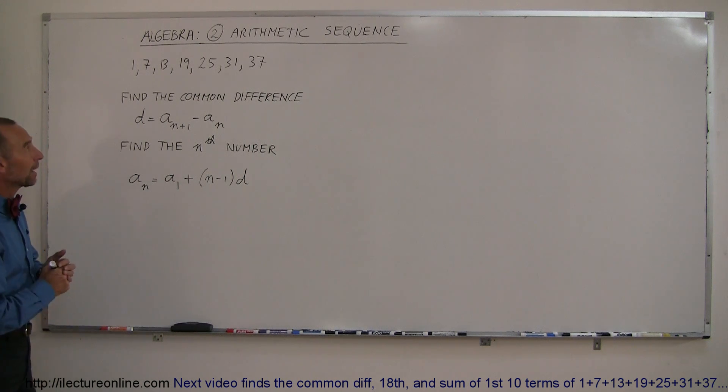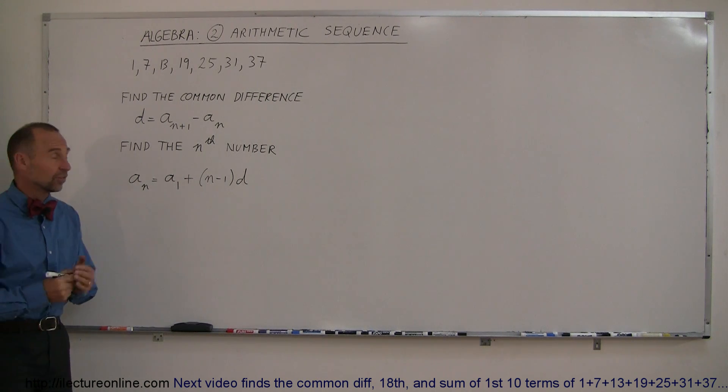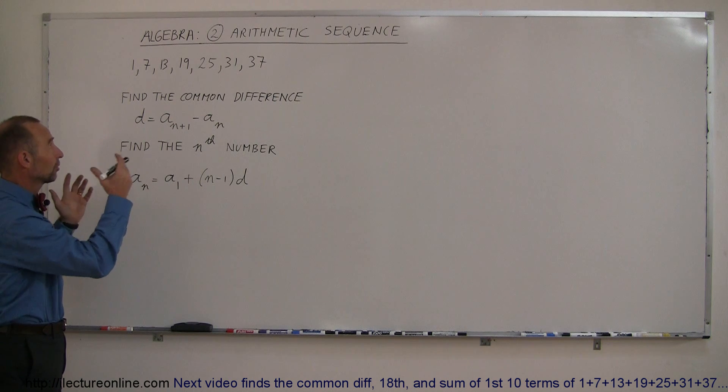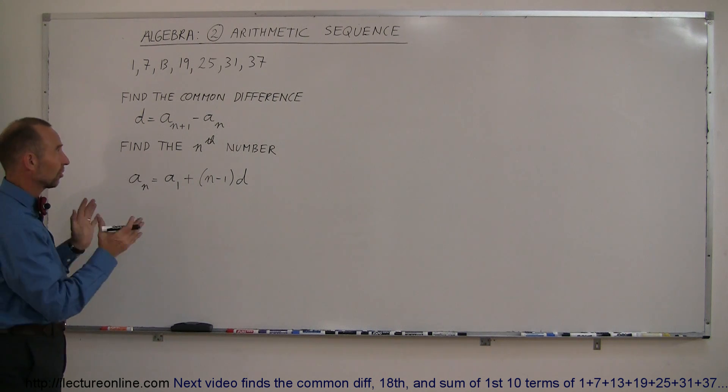And here we're going to talk a little bit more about the arithmetic sequence. A sequence, again, is just a listing of numbers, put some commas in them. We're not adding these numbers, just a set of numbers.